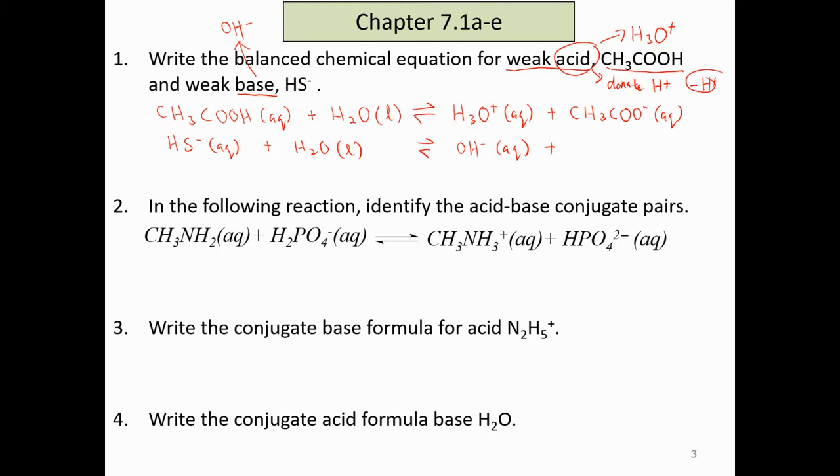Now next one, what will happen to HS-? We know that base accepts proton. How many hydrogen do we have here? One. So when it becomes base, it becomes 2 hydrogen. Now the tricky question is, is it going to be positive or negative? Since we already have negative here, so if I accept 1 proton which is 1 positive here, and then we have 1 negative here, so positive negative becomes neutral. So it becomes H2S with no charge here.